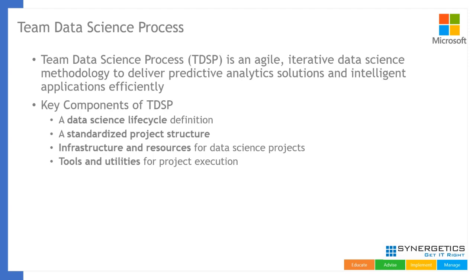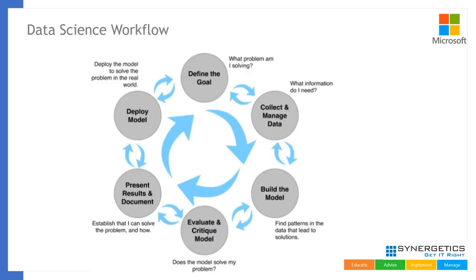The key components of the team data science process include: a data science lifecycle, a standardized project structure, infrastructure and resources — including different types of cloud resources — different types of tools and utilities, and the experience and knowledge of a specific skill set. All these are essential parts of the team data science process. There are six main bold steps, each with many sub-steps.